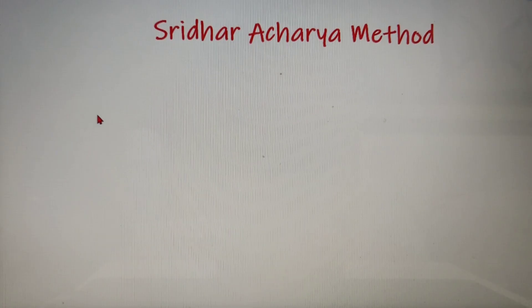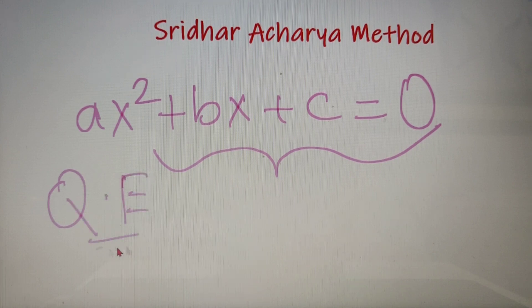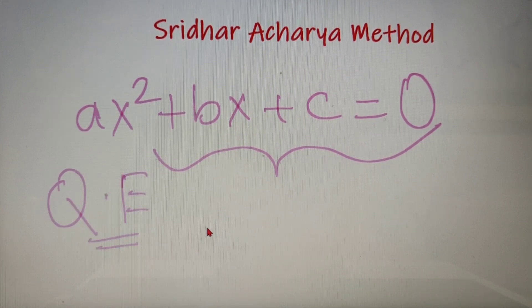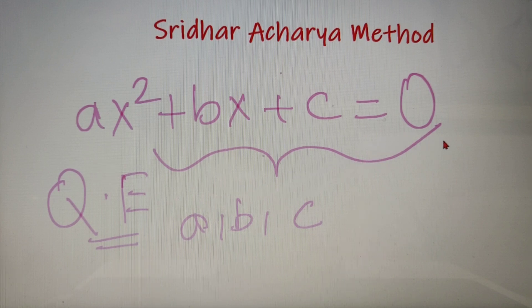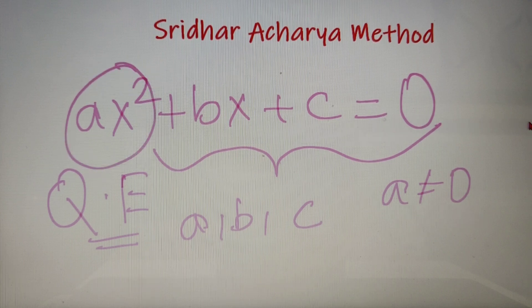A quadratic equation is basically of the form ax² + bx + c = 0. An equation of this form is called a quadratic equation, where a, b, c are the numerical coefficients and x is any random variable. There is only one restriction: a cannot be 0, because if a is 0 then the whole squared term disappears and it simply becomes a linear equation. Otherwise a, b, and c can take any other value.